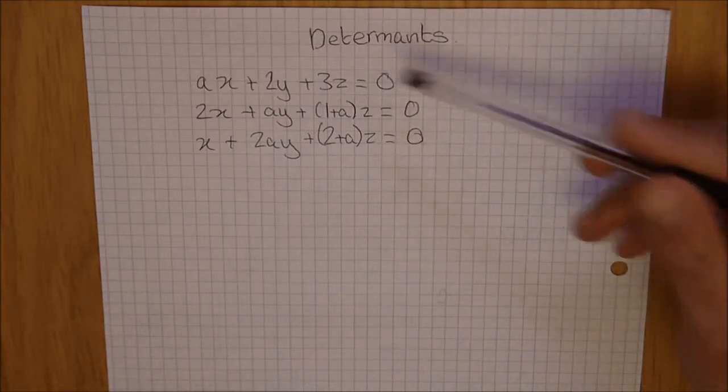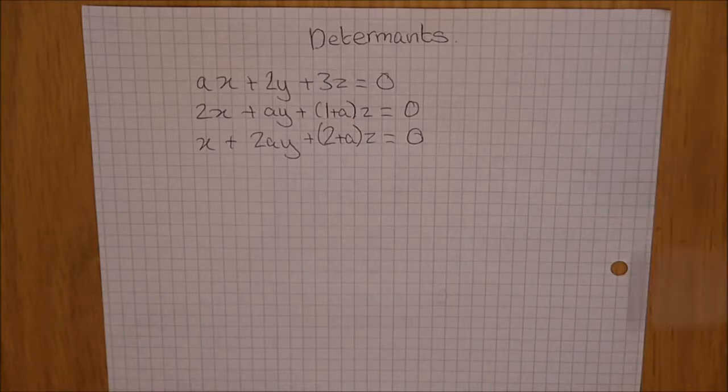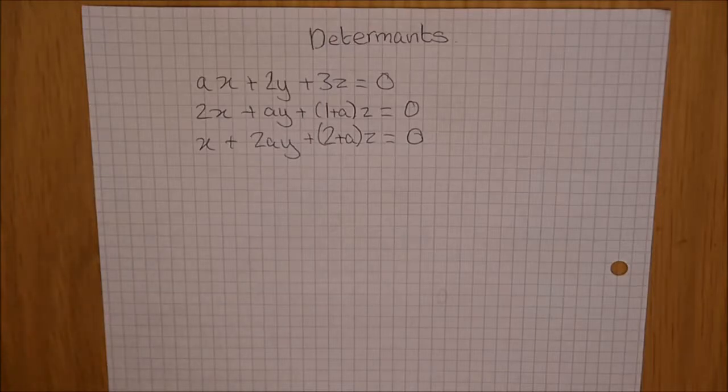Now, as you can see here, every equation is equal to zero. That means they're linearly dependent on each other, and that also means we can solve it using a matrix.